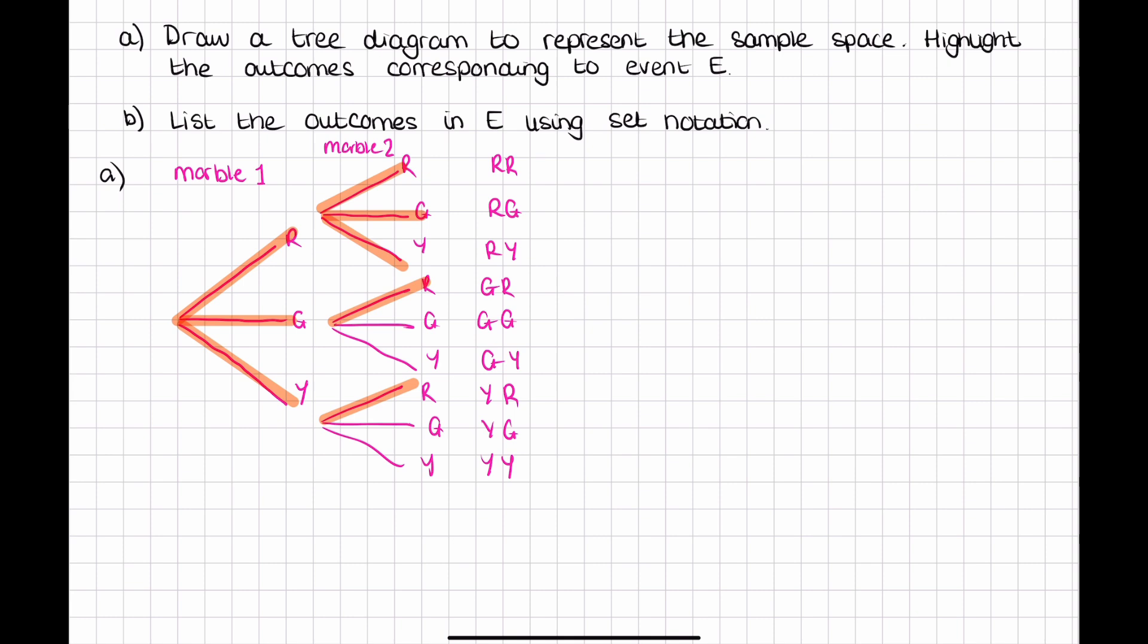Now part B lists the outcomes in E using set notation. So set notation means we're going to have our event E equals, we're going to have our curly brackets. Now all our options of our event E, which is the event that would pull out at least one red marble.